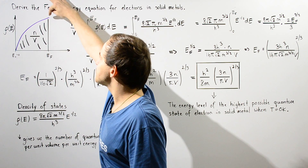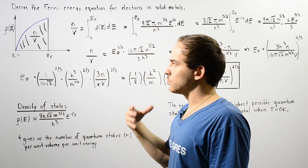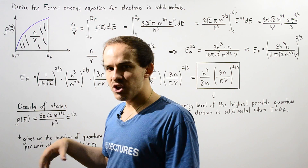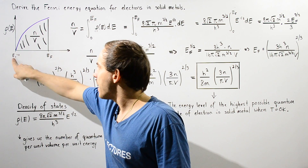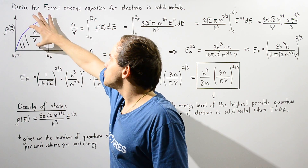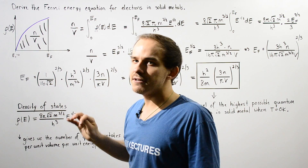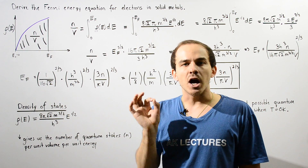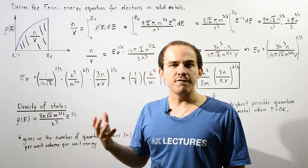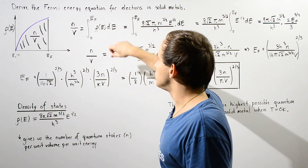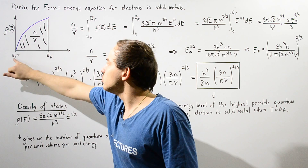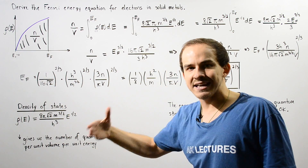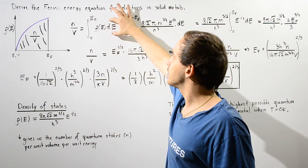E_F is the highest possible value, and we choose our lowest possible value to be equal to zero. If we use calculus and integrate this curve from the lower bound to the upper bound, we get the shaded region, which corresponds to lowercase n divided by uppercase V.